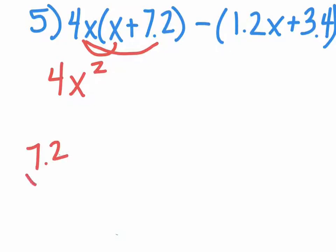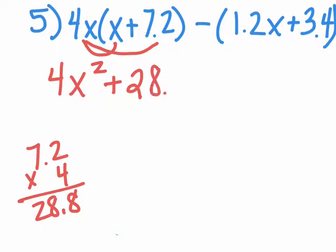I'm going to do 7.2 times 4 over here, and that gives me 28.8, and there's an x also, so I have plus 28.8x.